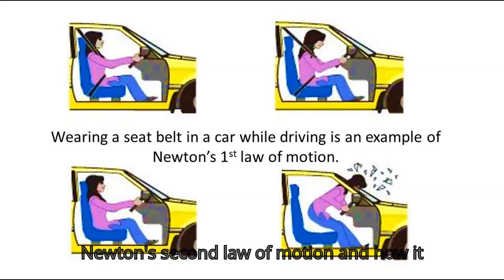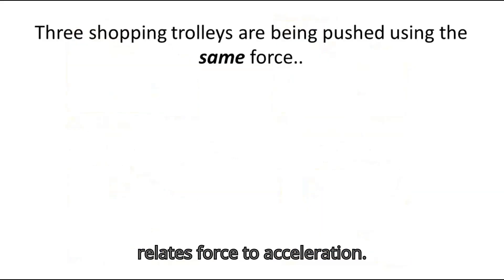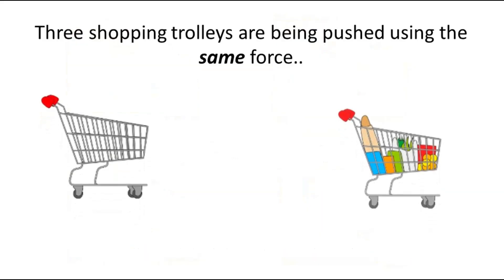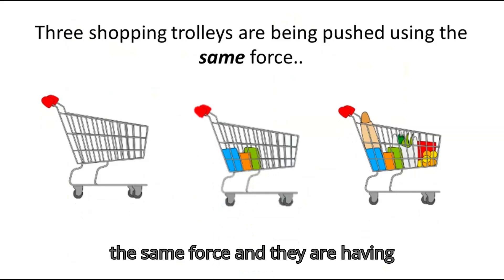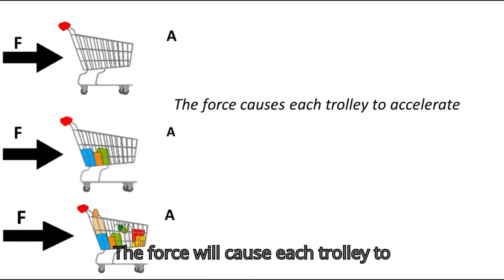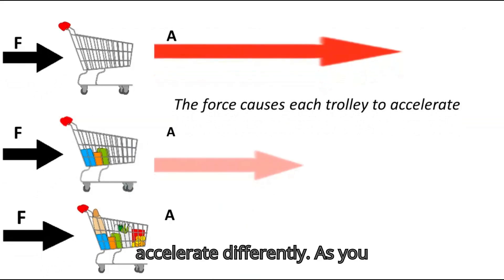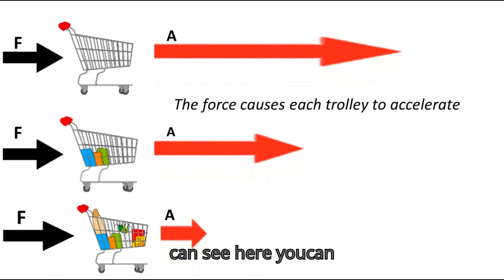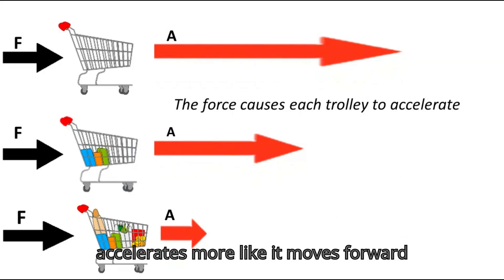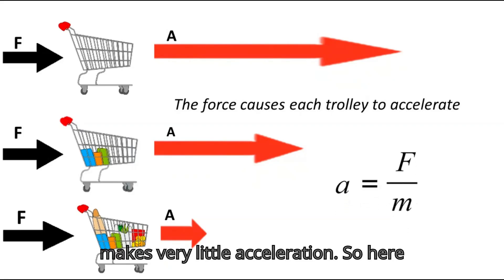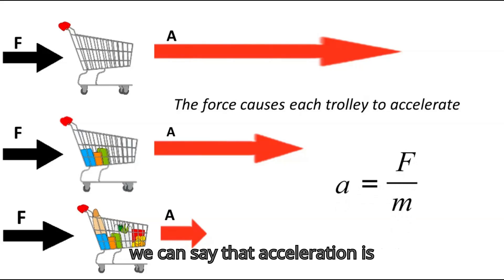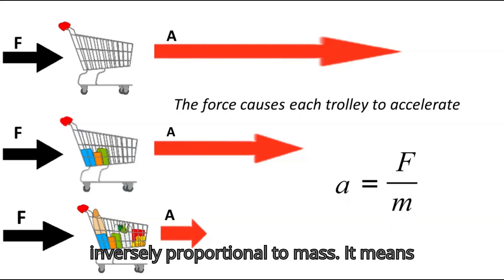Now let's discuss Newton's second law of motion and how it relates force to acceleration. Suppose there are three shopping trolleys being pushed with the same force but having different masses. The force causes each trolley to accelerate differently — the trolley with no mass accelerates more, moving forward more, whereas the trolley with more mass produces very little acceleration.